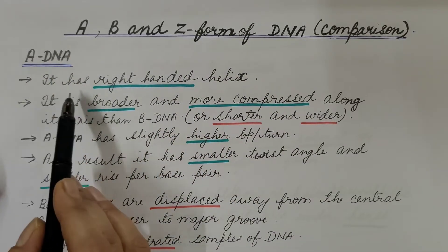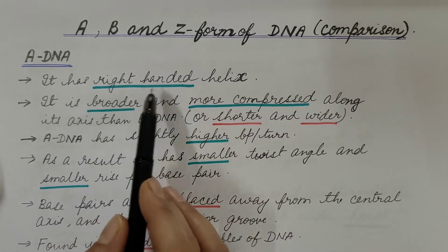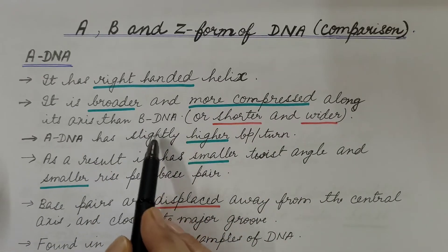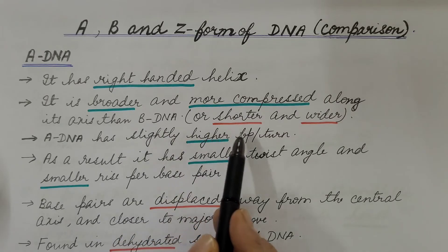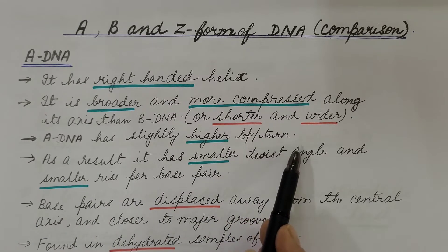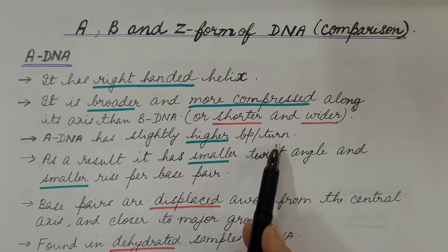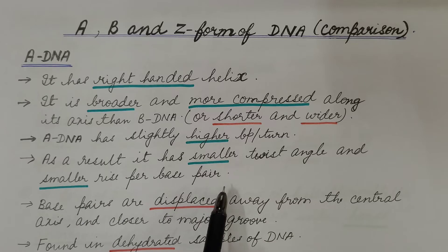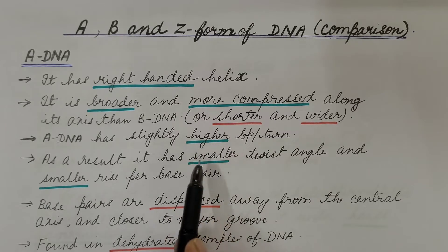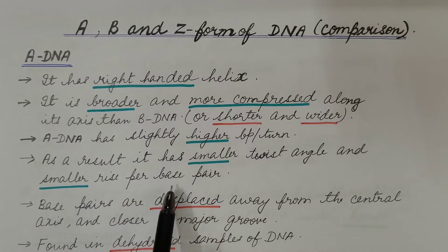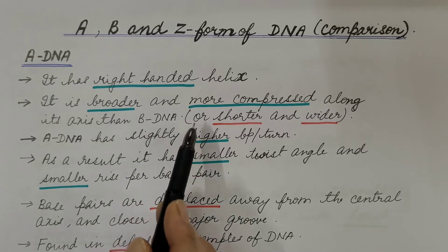First, let us see A-DNA. It has a right-handed helix. It is broader and more compressed along its axis than B-DNA; that is, compared to B-DNA, it is shorter and wider. A-DNA has a slightly higher number of base pairs per helical turn compared to B-DNA. As a result, it has a smaller twist angle and smaller rise per base pair, so the distance between two base pairs is smaller compared to B-DNA.